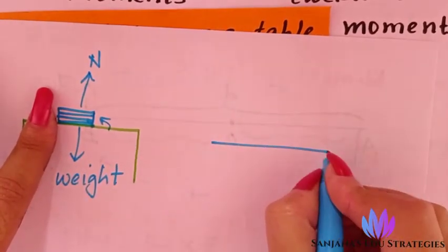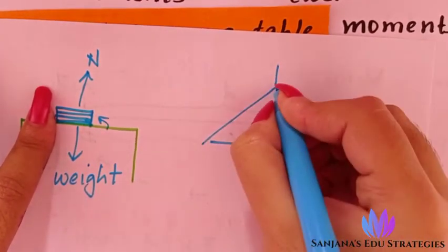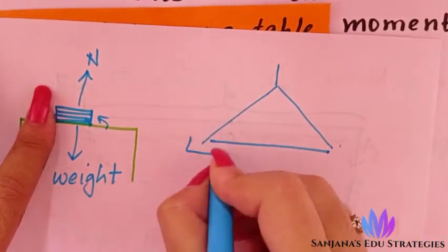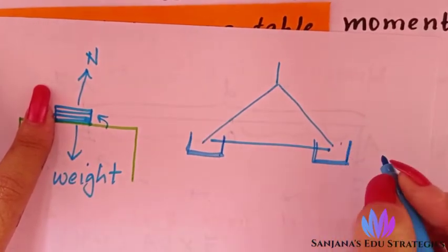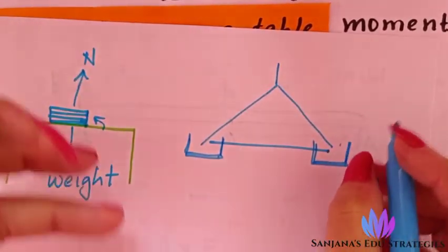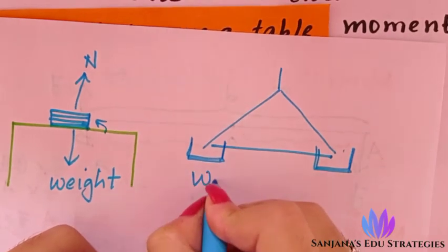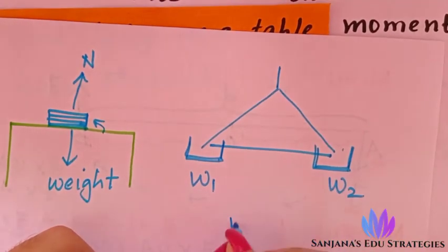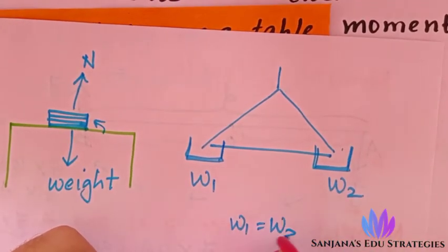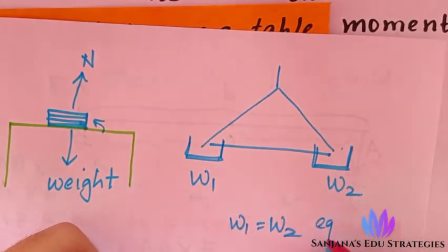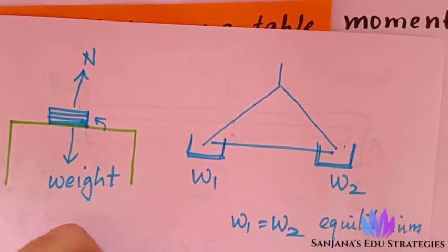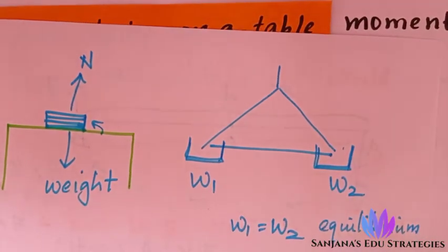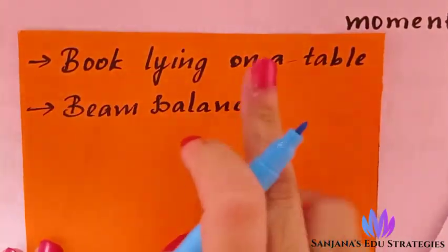The next example is a beam balance. A beam balance has two sides connected together. On one side you keep some weights, and on the other side also you keep some weights. If both weights W1 and W2 are equal, then you can say they are in equilibrium — static equilibrium — meaning they are not moving; they are at rest.